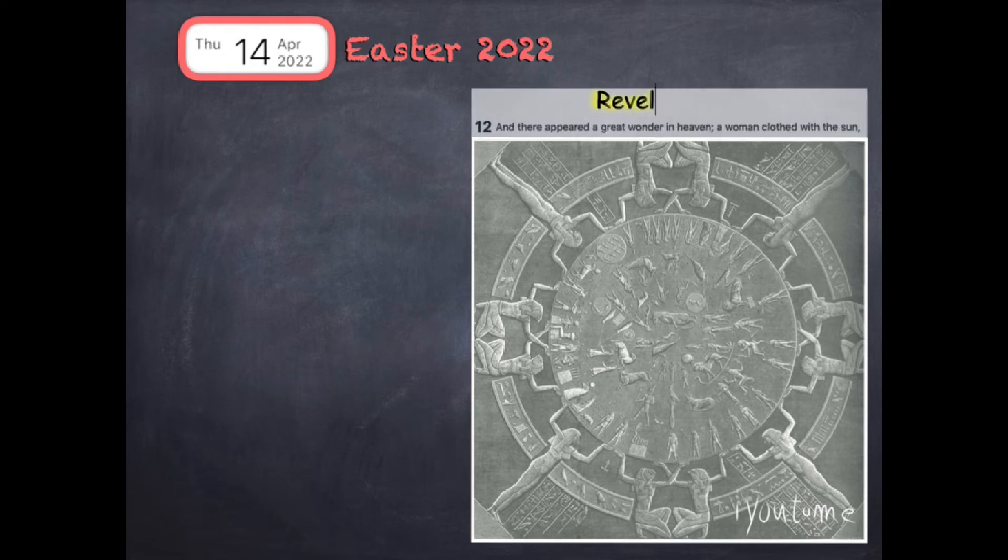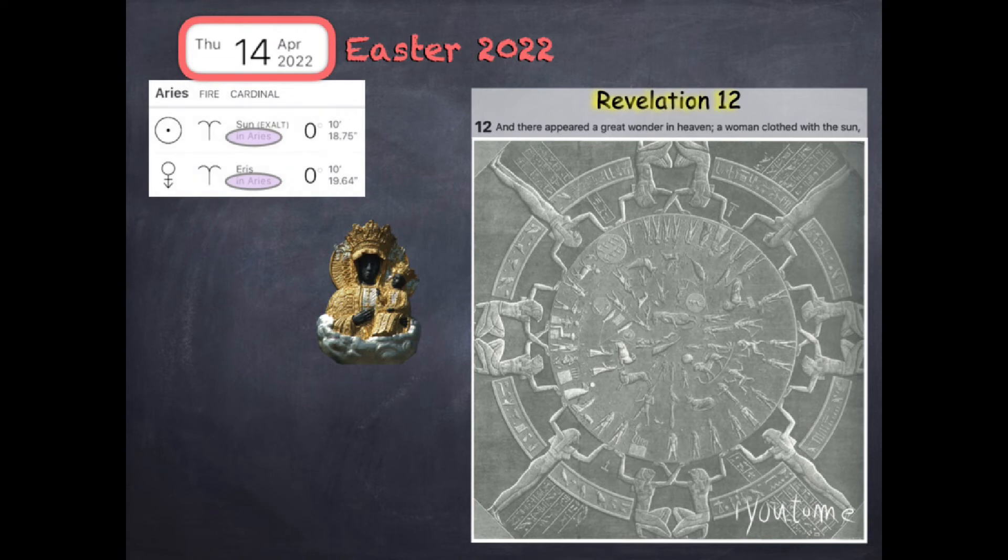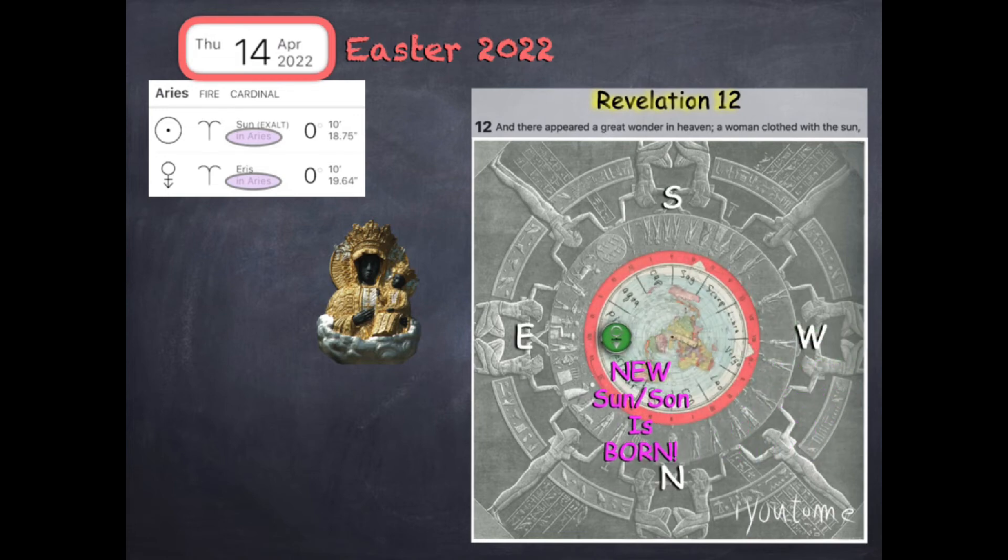Here is an excerpt of a future presentation explaining what happens for Easter 2022. In Revelation 12, I quote, And there appeared a great wonder in heaven, a woman clothed with the sun. The mother of all mothers aligns with the sun at zero point Aries, or arise. A new sun is born in the east, a physical sun and a metaphysical sun called you.